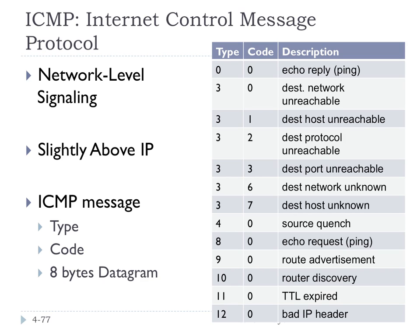ICMP is slightly above IP. ICMP messages are carried in IP datagrams, but it's not really a transport layer — it's just this special helper layer right above IP. You can see here ICMP messages have a type and a code, and they also have the first eight bytes of the datagram that caused the error. When errors happen at IP, ICMP is the protocol used to send messages back to say something bad is going on, like you're trying to reach a port that's not reachable on this host.